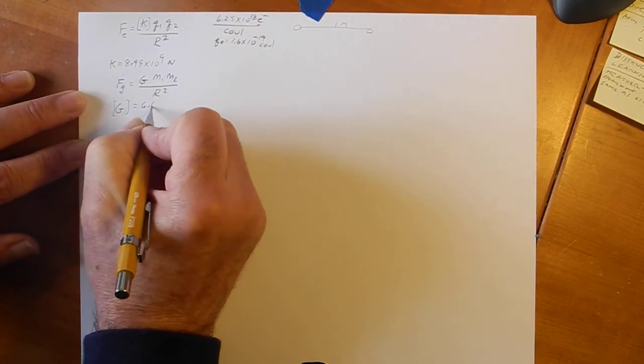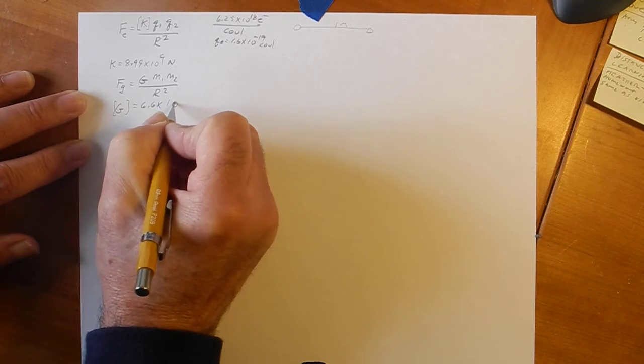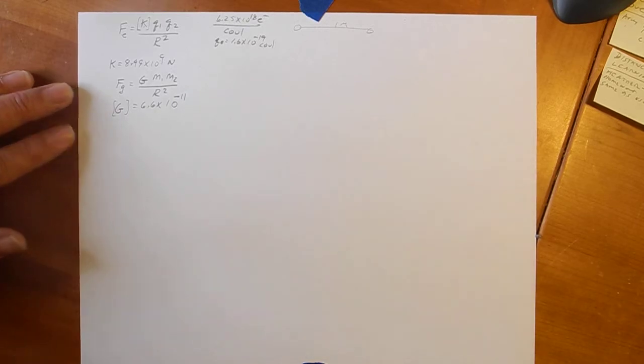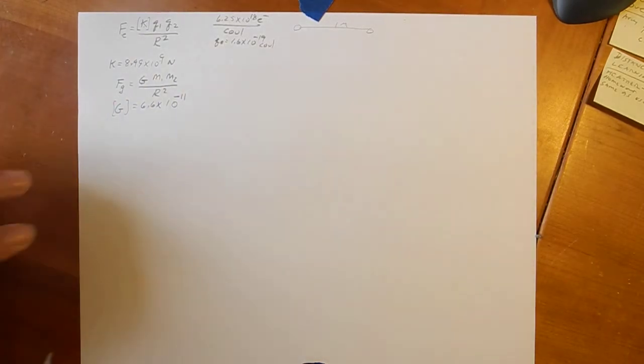G is 6.67 times 10. And check it out. This guy is to the positive 9th. This guy is to the negative 11th. That's why gravity is so weak.